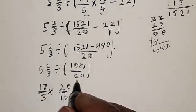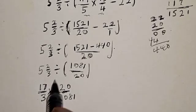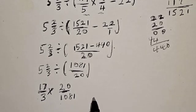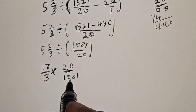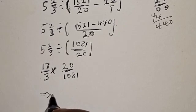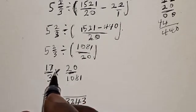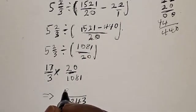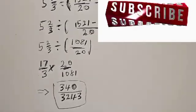When you change the division sign to multiplication, you take the inverse of what follows. So the inverse of 1081 over 20 is 20 over 1081. Therefore: denominator is 3 times 1081 = 3243, and numerator is 17 times 20 = 340. Our final answer is 340 over 3243. I hope you enjoyed the class.